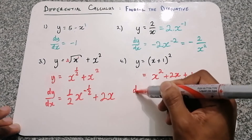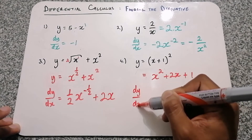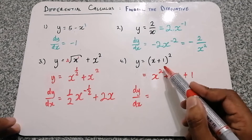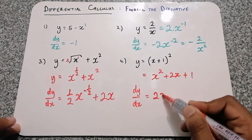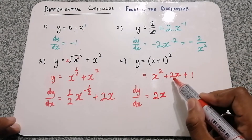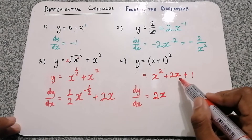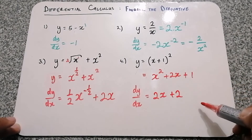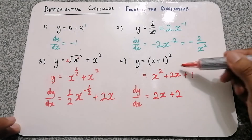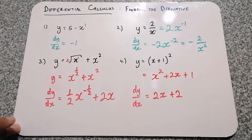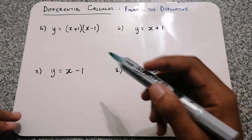Now we can take the derivative. The exponent 2 is multiplied in front, and then the exponent minus 1. Remember this 2x term is just a number with an x, so the number remains and the x falls away because it becomes x to the power of 0. The constant that doesn't have an x just becomes 0.